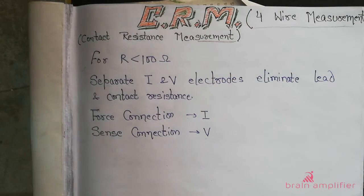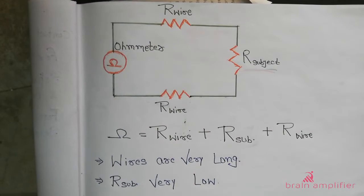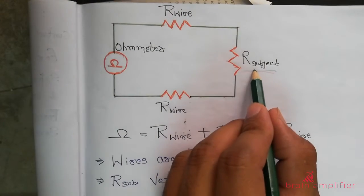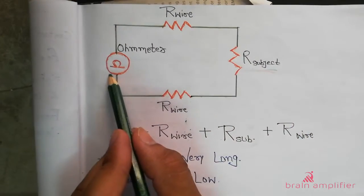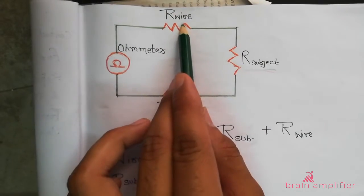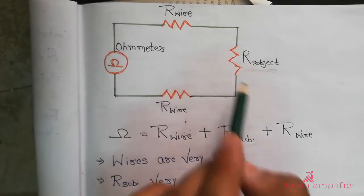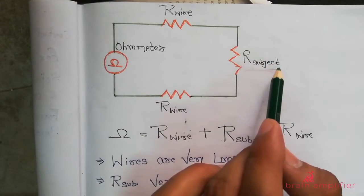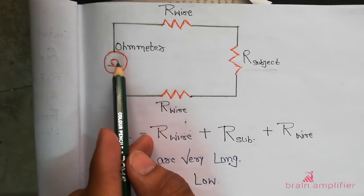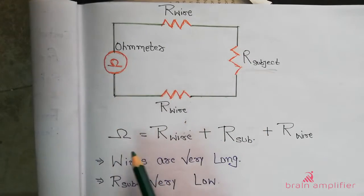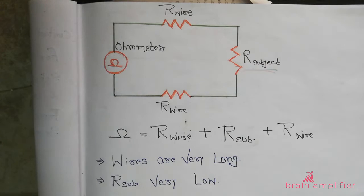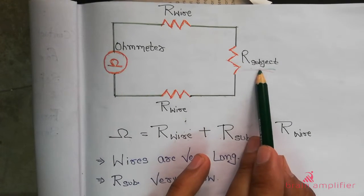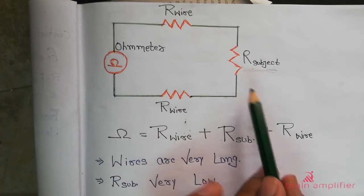Normally, how do we measure resistance? Suppose I have to measure the resistance of R_subject. I'll connect this R_subject to my ohmmeter or multimeter with these wires. R_wire is the resistance of each connecting wire. So my ohmmeter will show me the resistance of R_wire plus R_subject plus R_wire. This is fine as long as R_subject is in the kilo-ohm range and R_wire is just a few ohms.